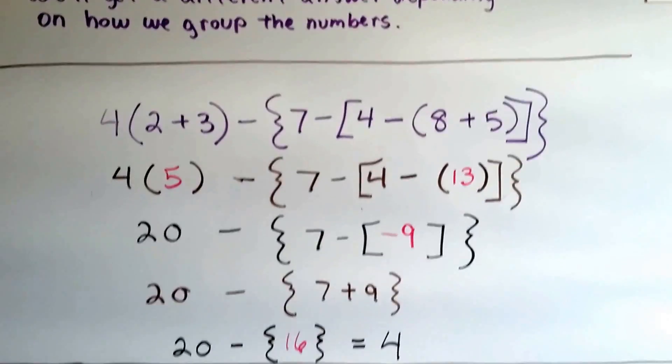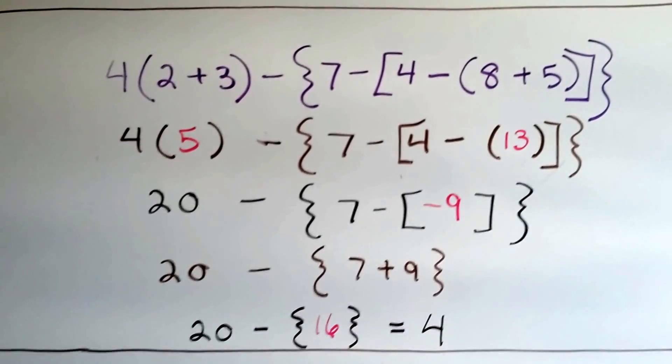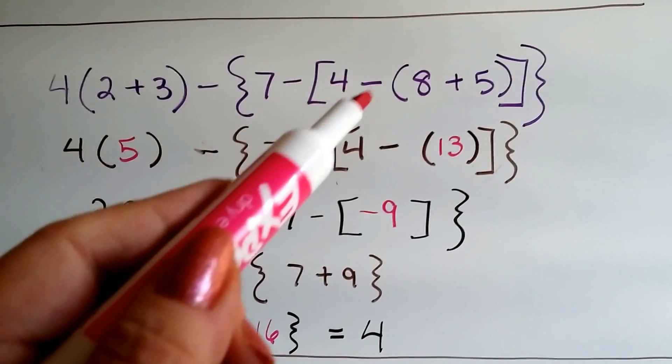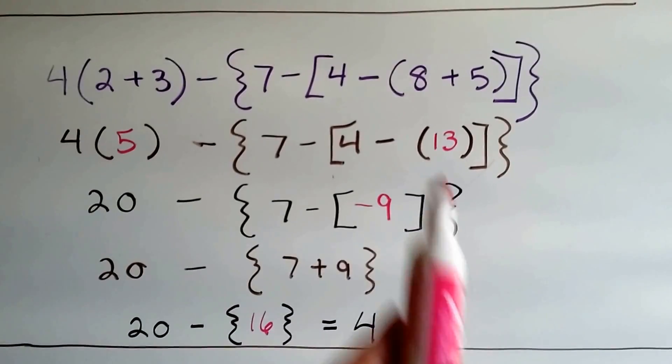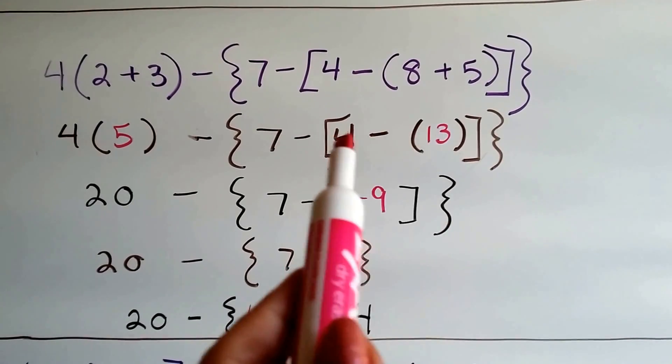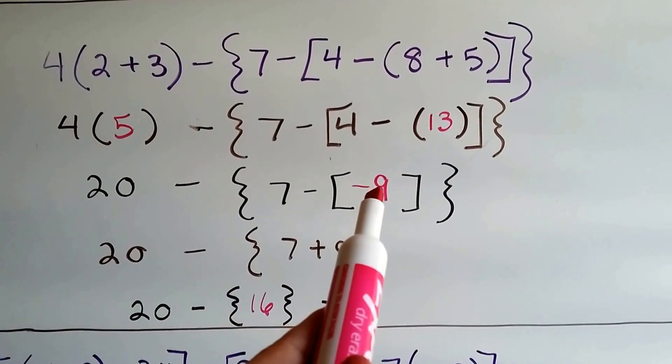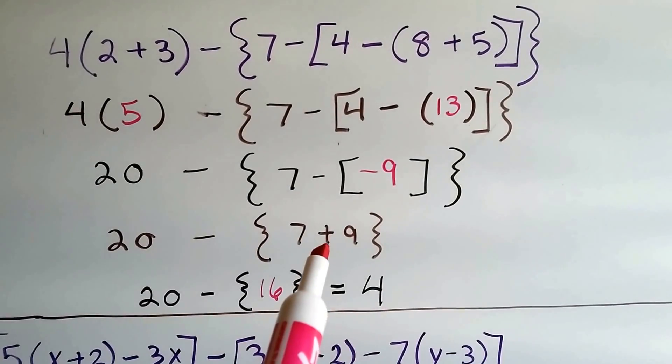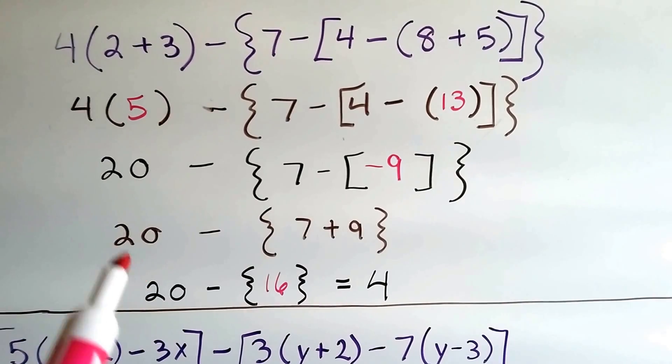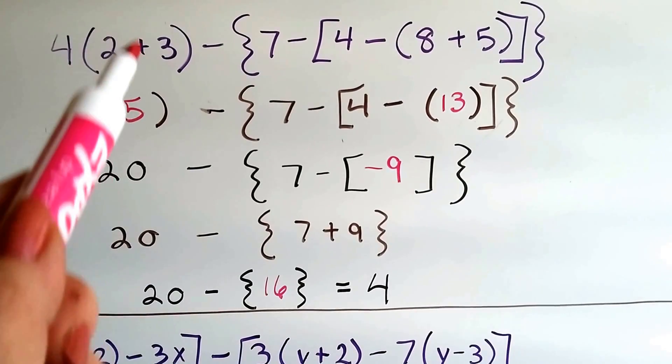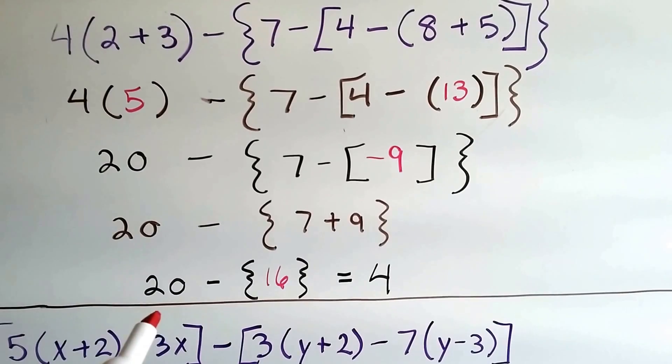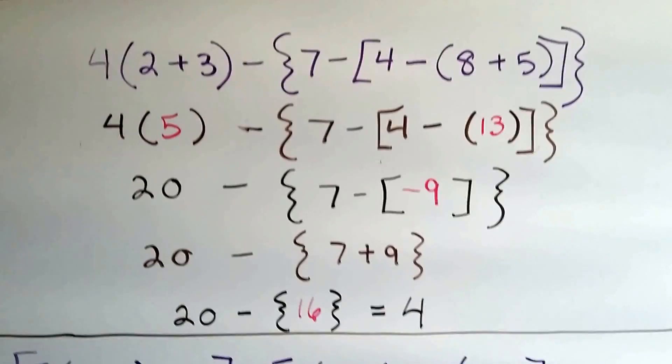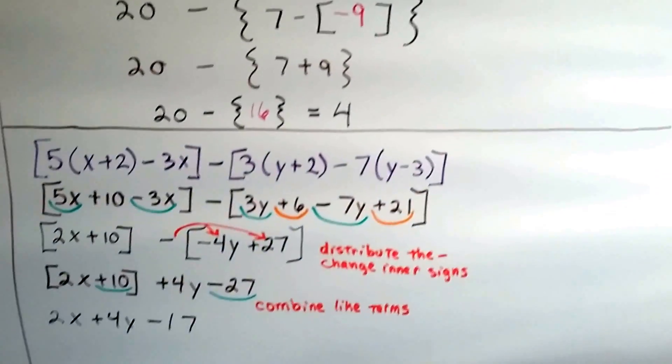Let's take a look at this one. Now we have 4 times 2 plus 3, and we're going to subtract 7 minus a 4 minus an 8 plus 5. So we do inside these parentheses first and get 13. Now we have 4 minus 13. That's going to give us a negative 9. Now we have 7 minus a negative 9. When you subtract a negative, you add the opposite, so we've got 7 plus 9. So now, over here, we have 4 times 5. 2 plus 3 is 5, and that's 20. So we end up with 20 minus 7 plus 9, or 20 minus 16. That's 4. See how we did that? Starting on the inside.